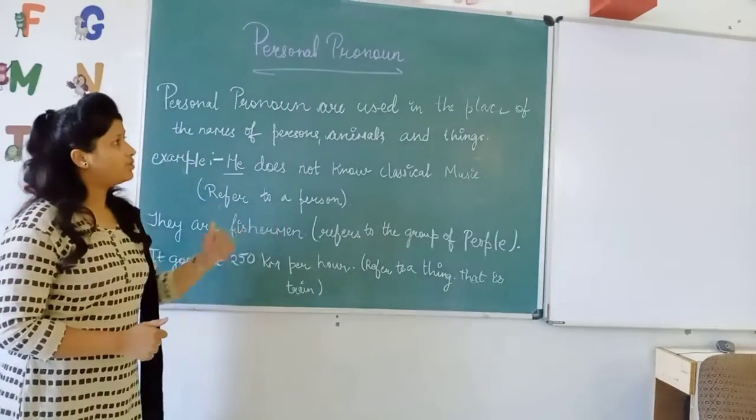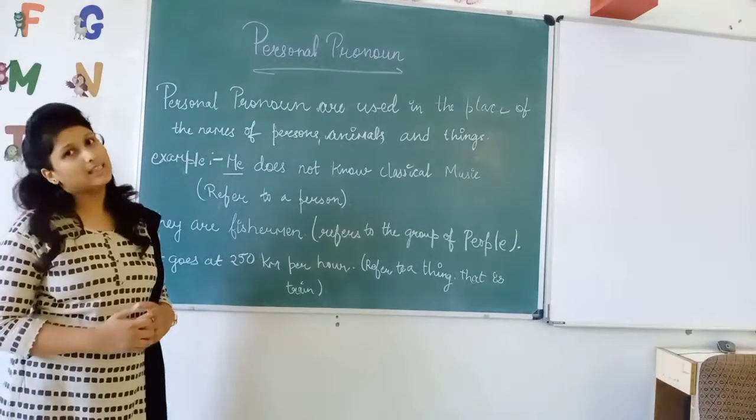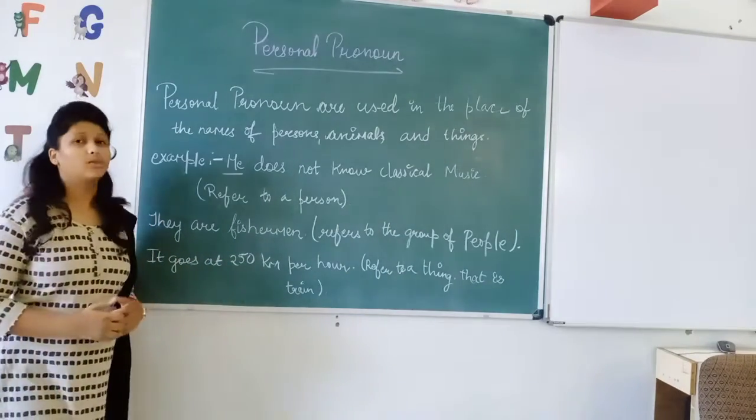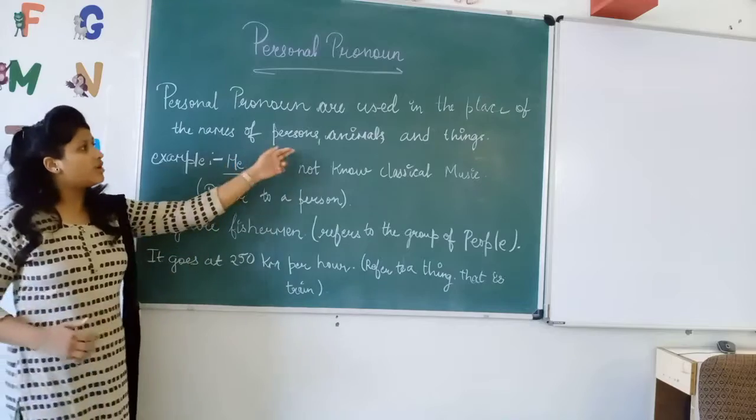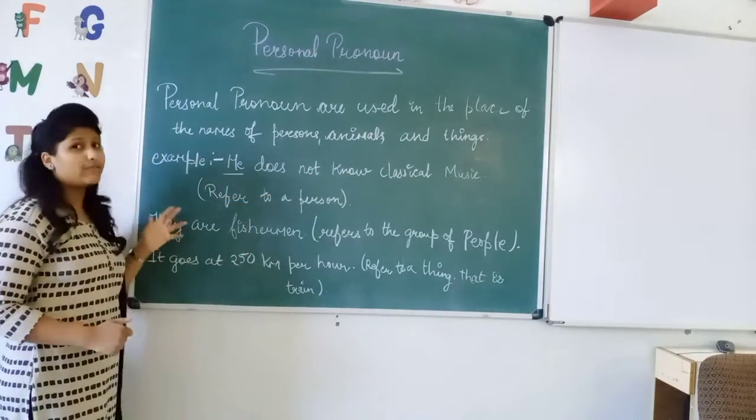So personal pronouns are used in place of the names of persons, animals and things. That means we can use personal pronouns with the names of persons, animals or things. Like for an example: